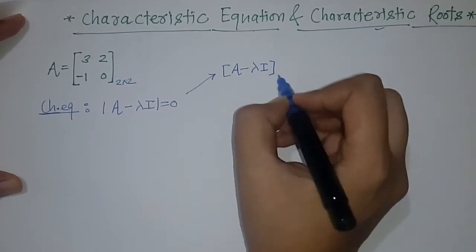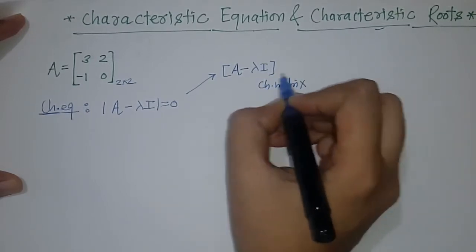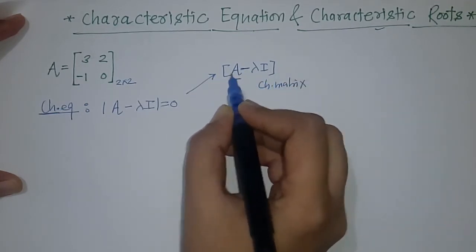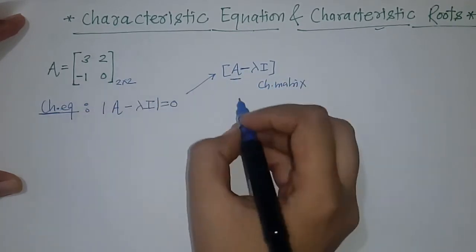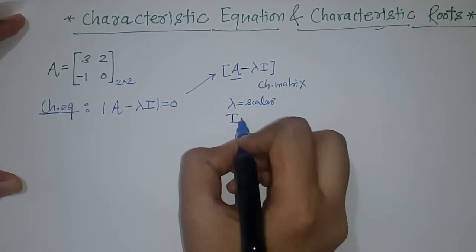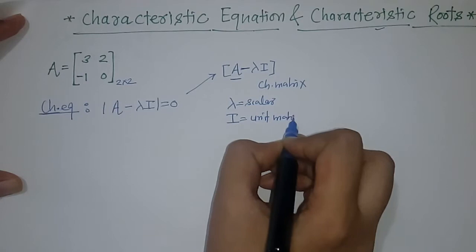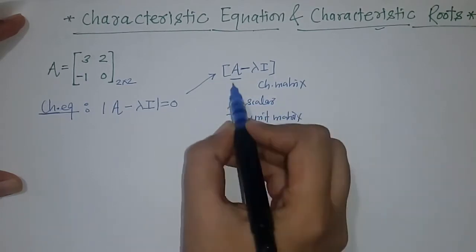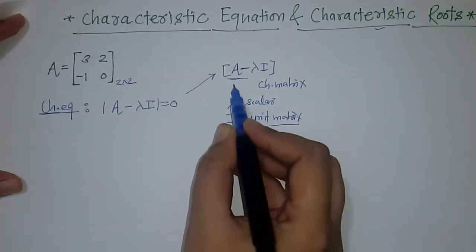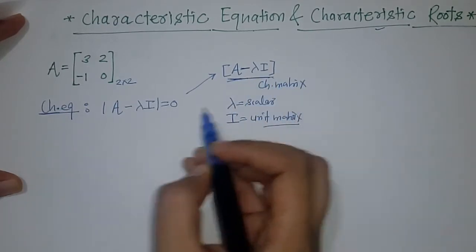This is obtained from a matrix called the characteristic matrix. That matrix is A minus lambda I, where A is the given matrix, lambda is a scalar, and I is the unit matrix of the same order as A. By substituting all of these, we get the characteristic matrix.